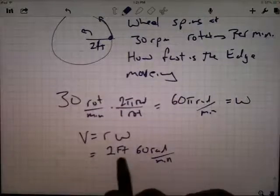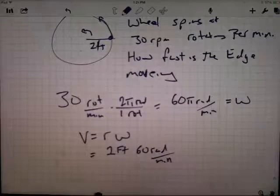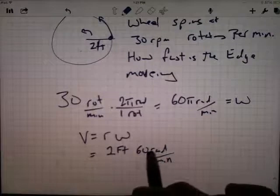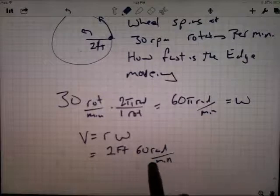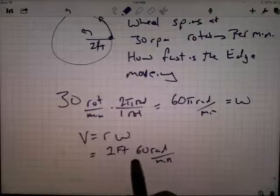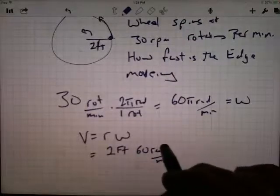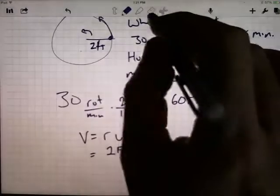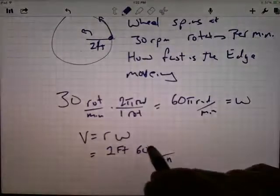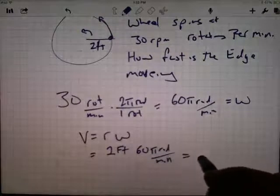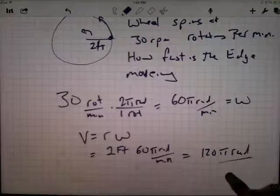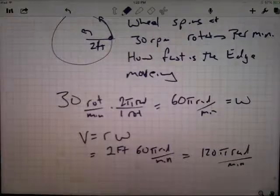If I just look at the labels here, this looks like it's going to be feet times radians per minute, and I've got to remember that radians isn't actually a label, that radian measure doesn't have, it's unitless, doesn't have a label. So this really is feet divided by minutes, and I lost a pi in there somewhere, that was 60 pi.